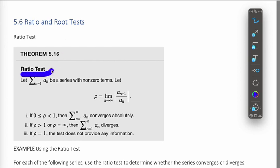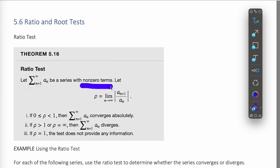Looking at the ratio test: if you have a series that has non-zero terms, you find the (n+1)th term, divide by the nth term, take the absolute values, and then find the limit as n approaches infinity. We can use the value of that limit to determine whether or not the series converges or diverges.